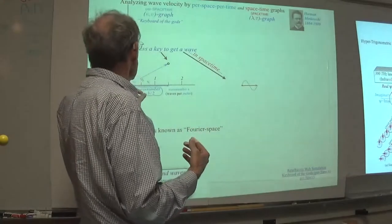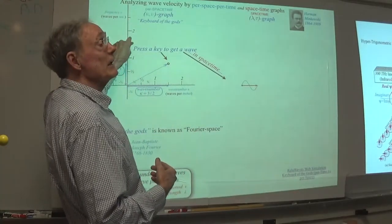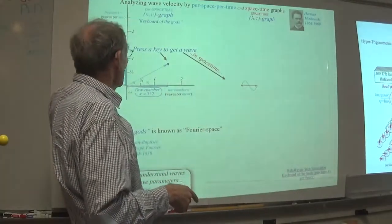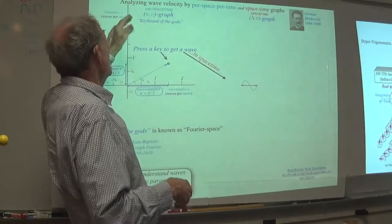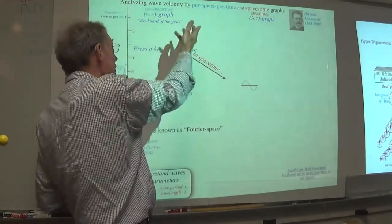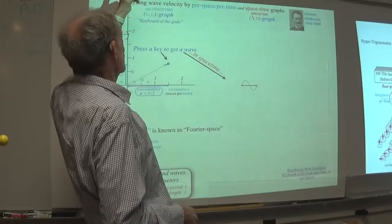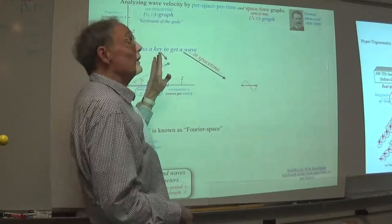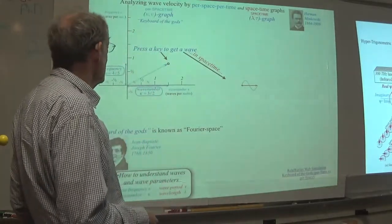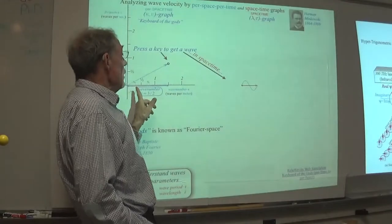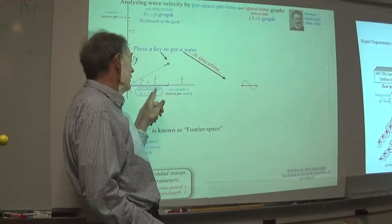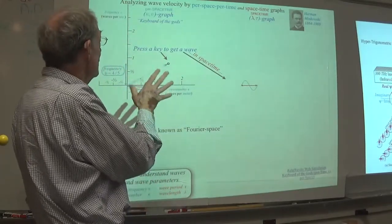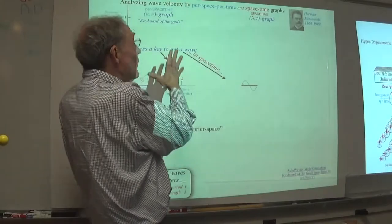I'm thinking of this as a keyboard of the gods - I can pick the frequency by pushing buttons like on a piano or flute. So I get a note by pushing this button, I get another one, at whatever frequency I want. This is a keyboard because you can make ultraviolet frequencies or infrasonic frequencies. By pushing the right button, I can also make the wavelength - that is the wave number, which is inverse wavelength - under my control. So this really is the idea of Fourier space.